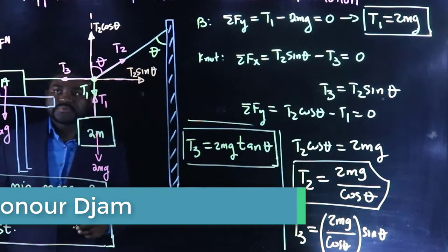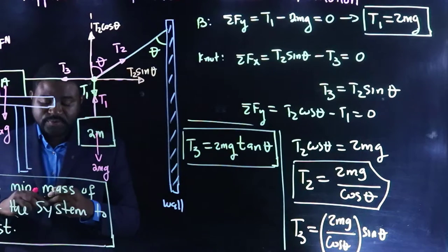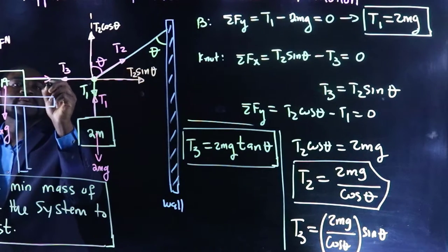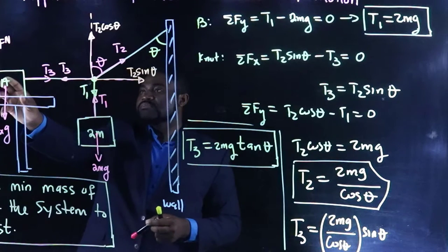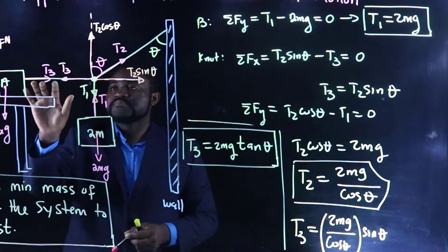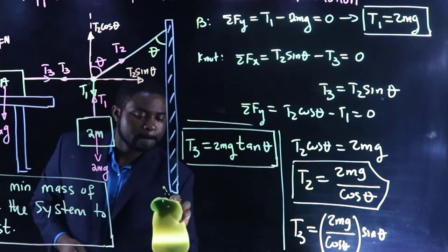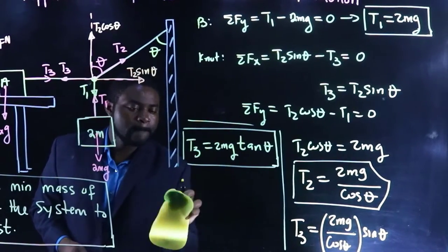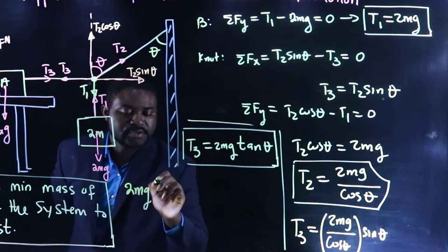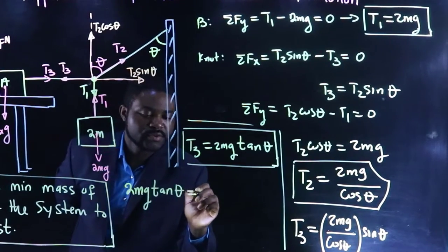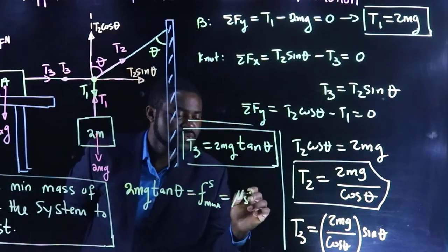Now, here is the trick. Block A is at rest. That means that this right here you have T3. See, block A is at rest. That means that the static friction force is balanced by T3. In other words, 2MG tan theta will be equal to Fs max, which is mu s Fn.